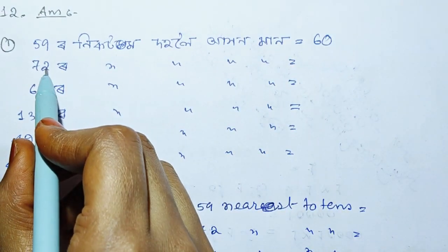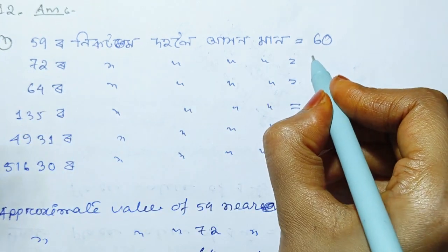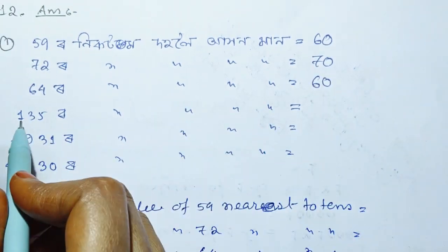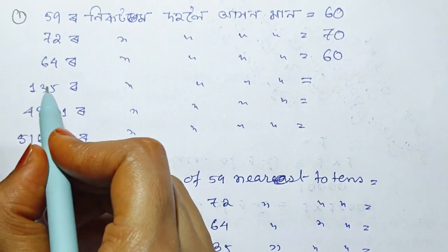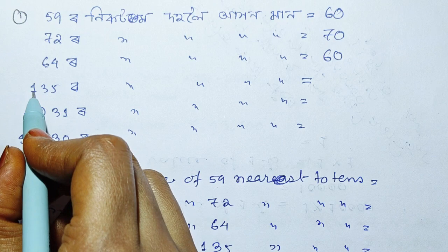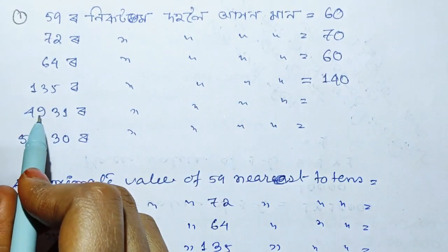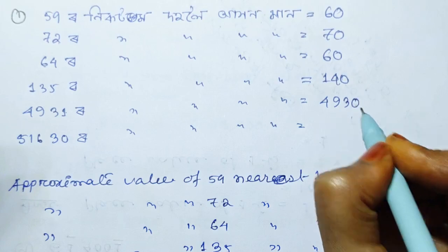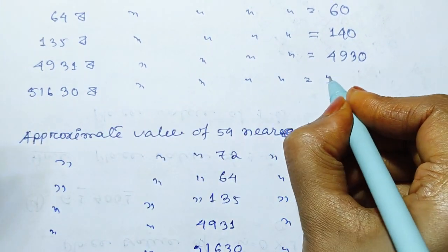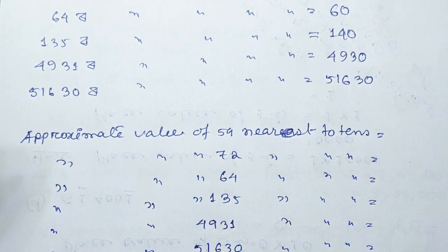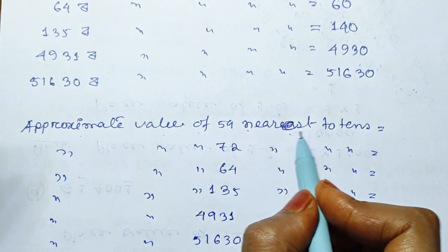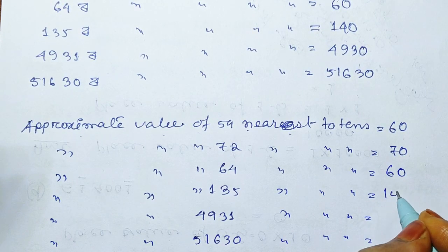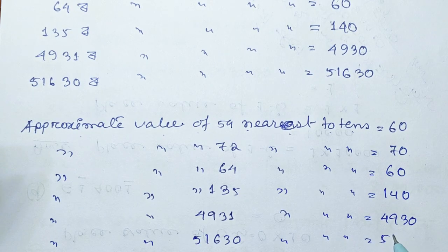So, the approximate value of 59 nearest to 10 is 60. Then 70 — for 64: 4 to 0, so rounded to 60. Then 135: 5 to 0, 10 to 0 — gives 140. Then 4930. The results: approximate value of 59 nearest to 10 is 60; then 70; then 60; then 140; then 4930; then 51630.